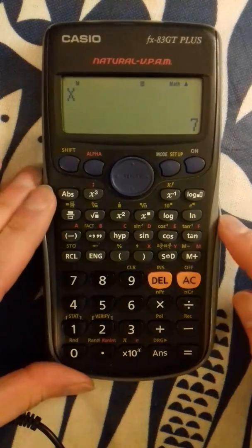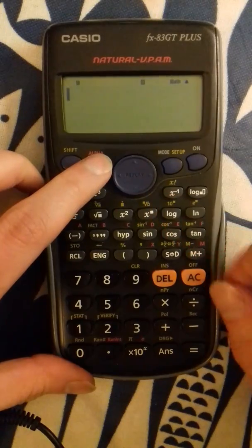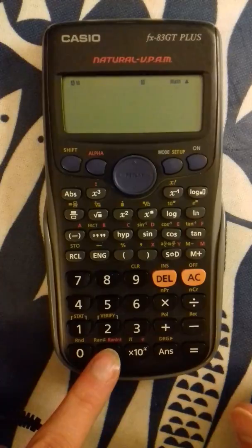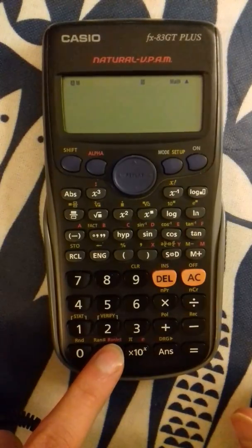To do this, we press alpha, this one down here that has red writing called ranint, that stands for random integer.